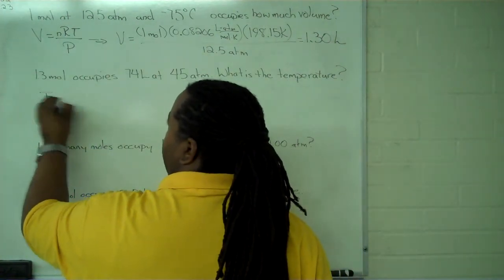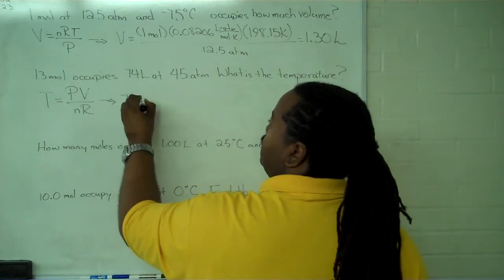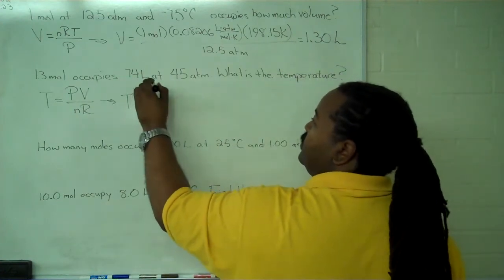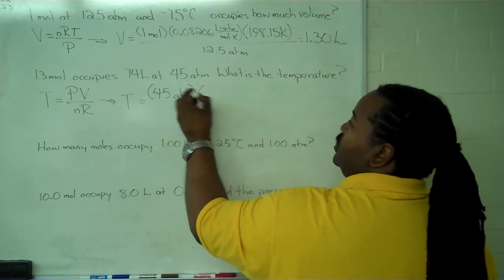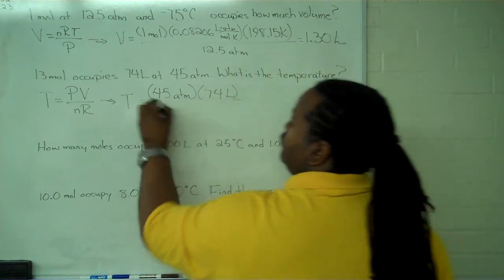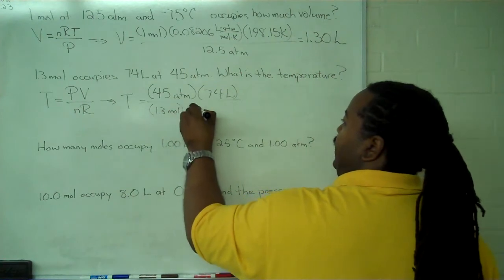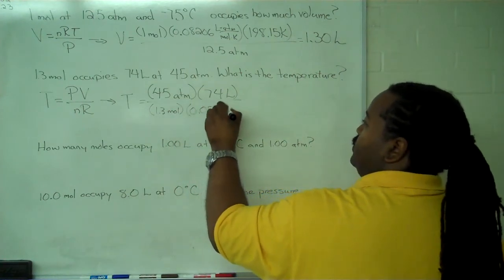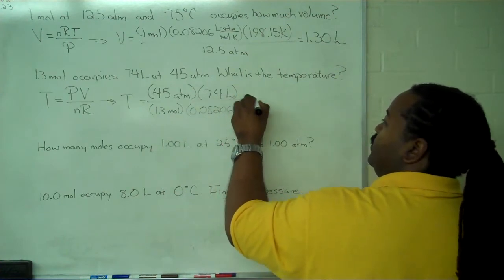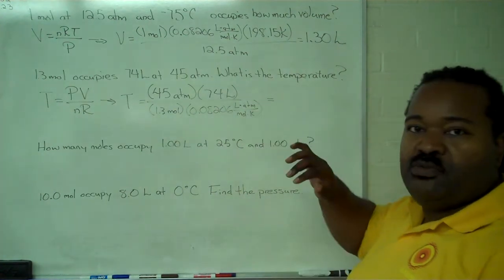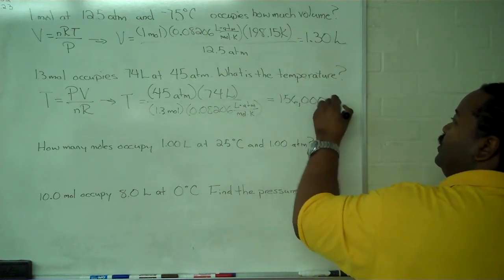That means that we need to rewrite the ideal gas law for temperature, PV over NR. So this means then that our temperature will be the result of plugging in all of our values: pressure, our volume, our number of moles, and our gas constant, 0.08206 liters times atmospheres divided by moles times Kelvin. And the value we get for our temperature is pretty large, it's 156,000 Kelvin.